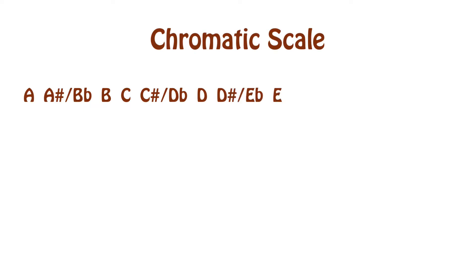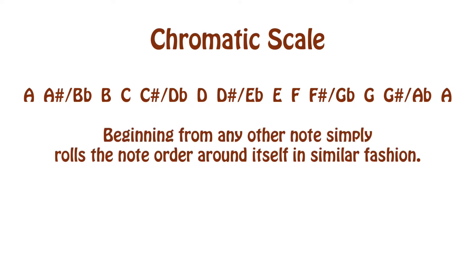So the chromatic scale, every note we have on the instrument we're playing, whatever it is, starting from A reads like this: A, A-sharp or B-flat, B, C, C-sharp or D-flat, D, D-sharp or E-flat, E, F, F-sharp or G-flat, G, G-sharp or A-flat, at which point we come back around to A and the cycle continues. Beginning from any other note simply rolls the note order around itself in similar fashion.